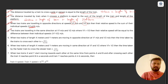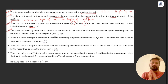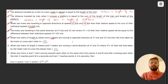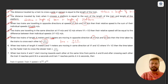Point 4: when two trains travel in the same direction with speeds v1 and v2, where v1 is greater than v2, their relative speed is v1 minus v2. So opposite direction — add the speeds; same direction — subtract. Point 5: when two trains of length x and y meters move in opposite directions with speeds v1 and v2, the time taken to cross each other is (x + y) divided by (v1 + v2).